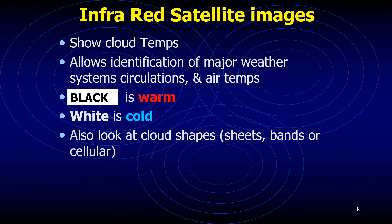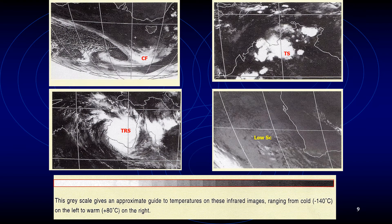Infrared images, unlike visible images, can also be produced in color, issued by certain bureaus of meteorology where the colors indicate the different temperatures of the surfaces. Here are some images I missed showing you last time — these are infrared images where the grayscale gives an approximate guide to temperatures ranging from cold on the left at about minus 140 degrees Celsius to warm on the right at about plus 80 degrees Celsius. You can see how a cold front (CF), a tropical storm, a tropical revolving storm (TRS), and low stratocumulus clouds are each denoted.